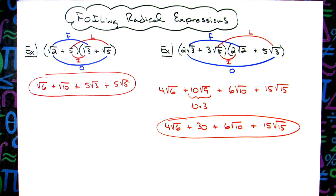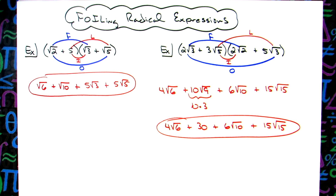We're really just focusing on the foiling part of how to multiply two binomials that include radical expressions. Thanks for watching — if the videos are helping, please share with your friends so they can benefit too, and don't forget to subscribe to the channel. Thanks!